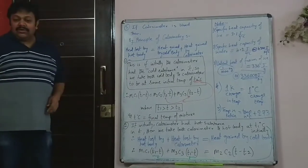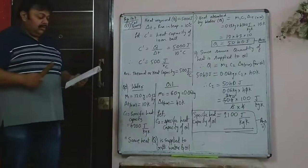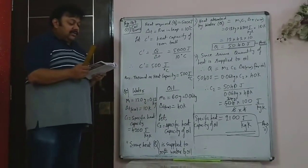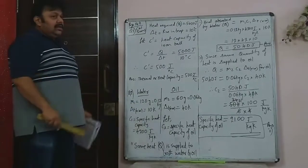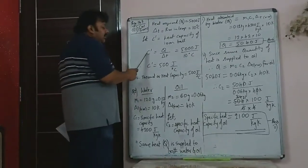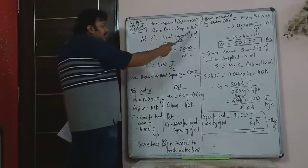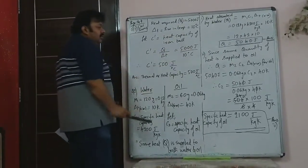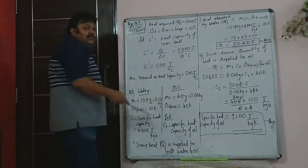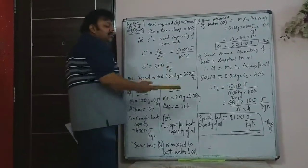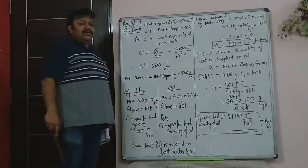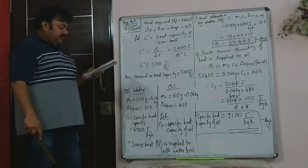First question on page 147: an iron ball requires 5000 joules of heat to raise its temperature by 10°C. Calculate the heat capacity C'. Using C' = Q/ΔT = 5000/10 = 500 J/°C. That is the thermal capacity or heat capacity of the iron ball. Always write units alongside values so the final answer's unit comes out automatically.